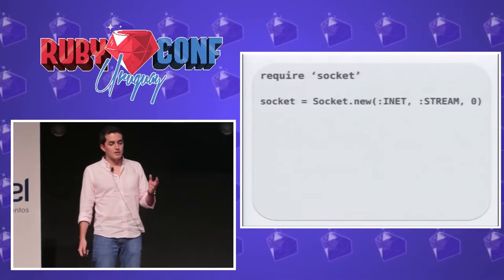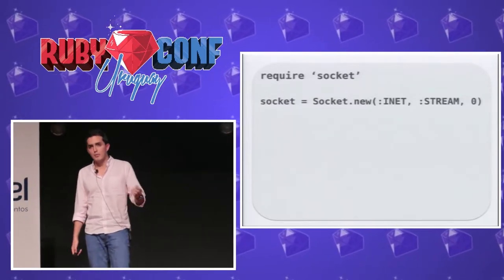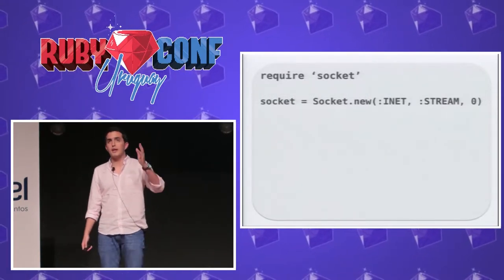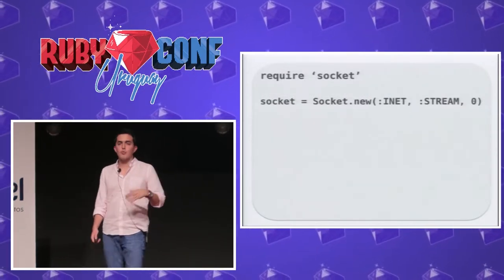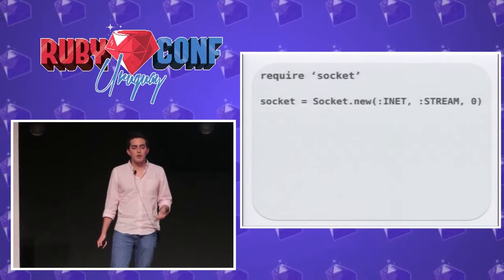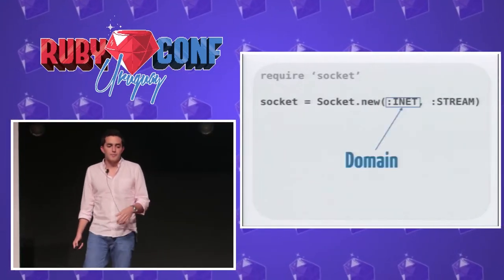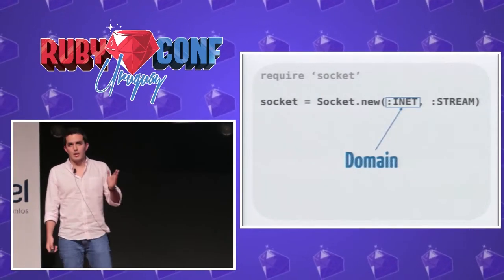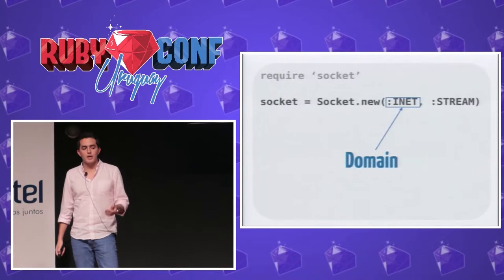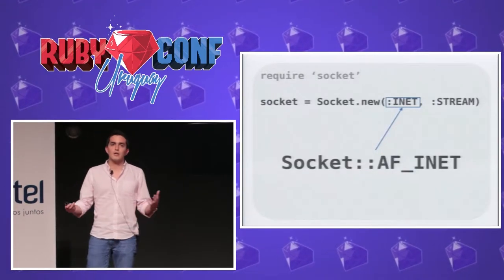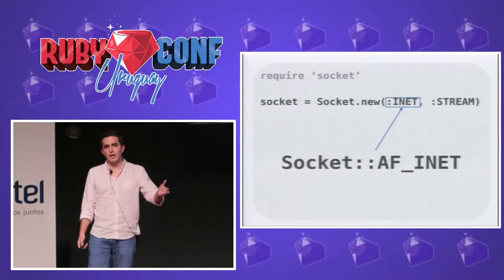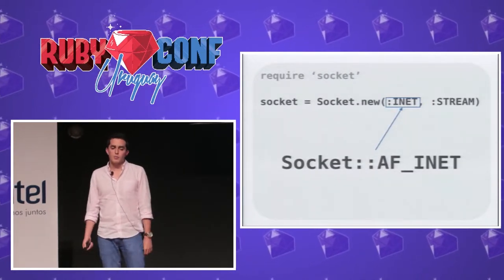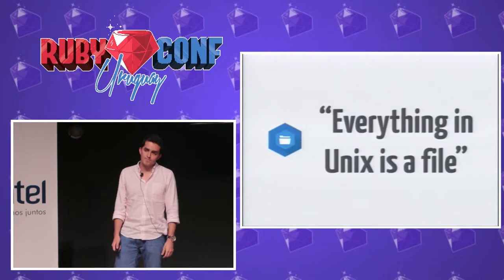We have the three arguments just mentioned: the first is the domain, then the type, and then the protocol. The protocol is zero, so that's an optional argument we're not concerned about. The INET symbol is the syntax to require the socket constant, and the same applies to stream, which is the type.